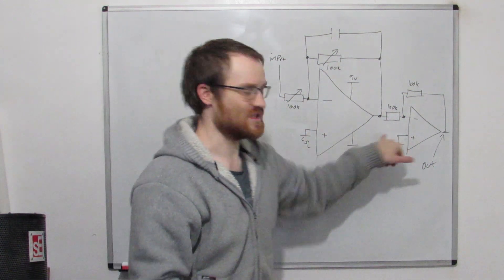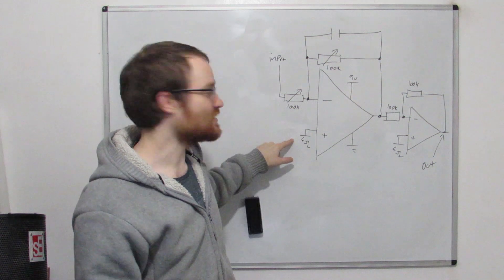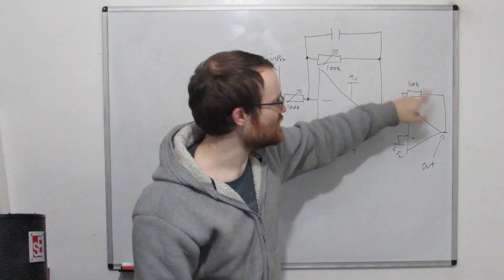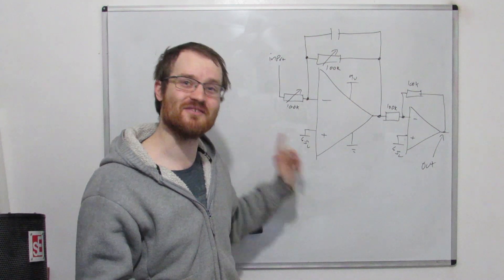So these two inputs obviously still exist, but they're internal to the chip, and they're setting that threshold for us. So with one, two, three, four components and one chip, we can make ourselves a stable active filter.